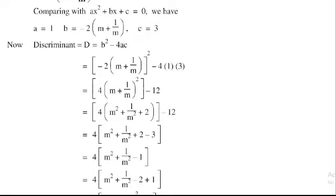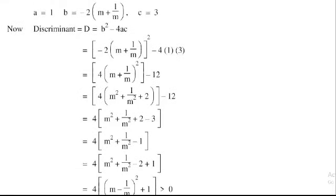This is the formula that is m minus 1 divided by m whole squared plus 1, so equals 4 into m minus 1 divided m whole squared plus 1, greater than 0.